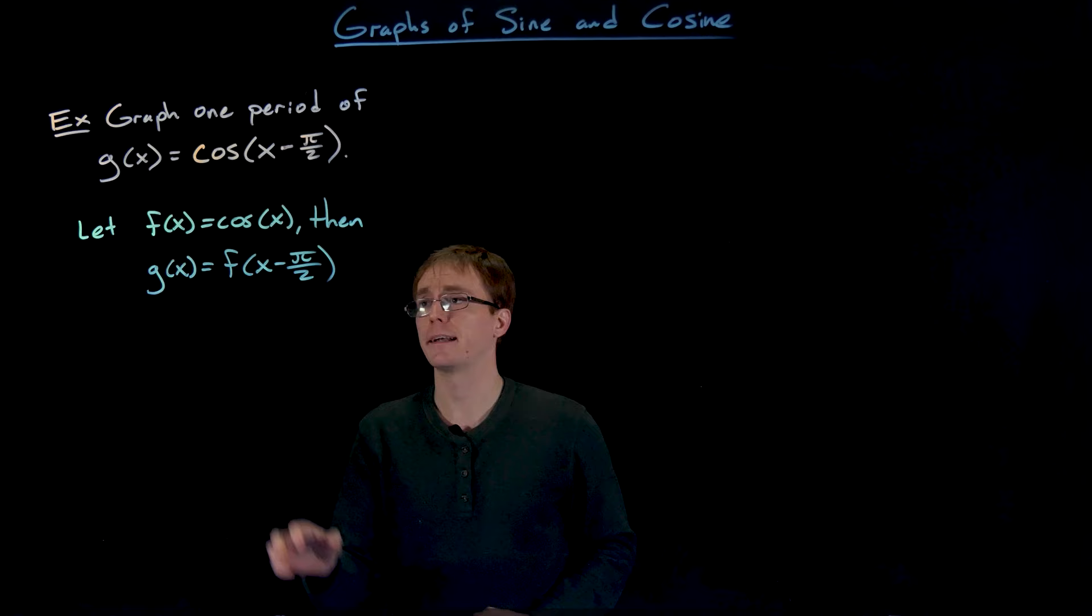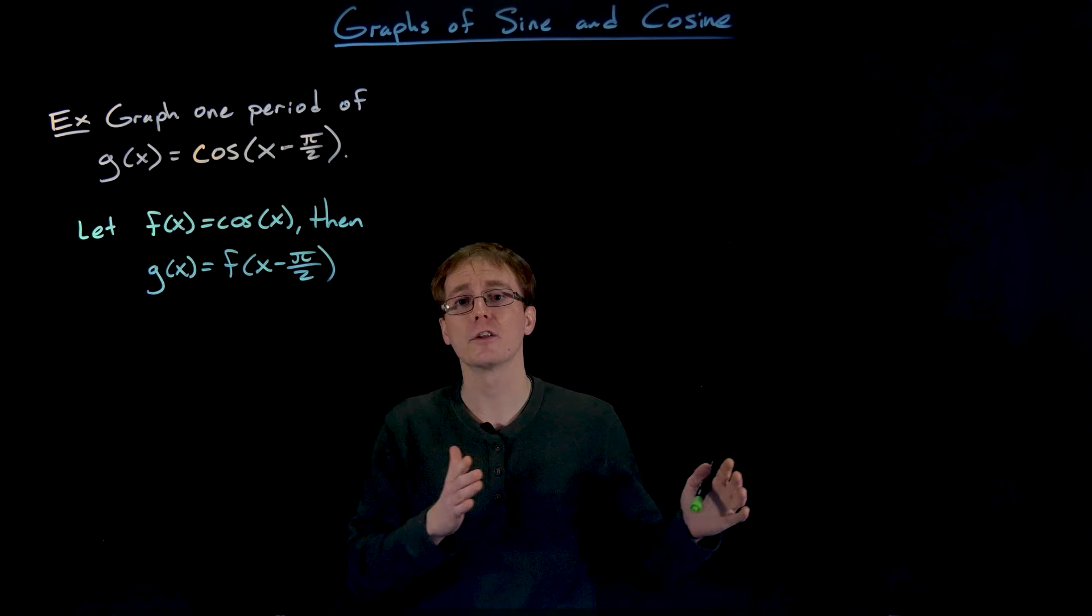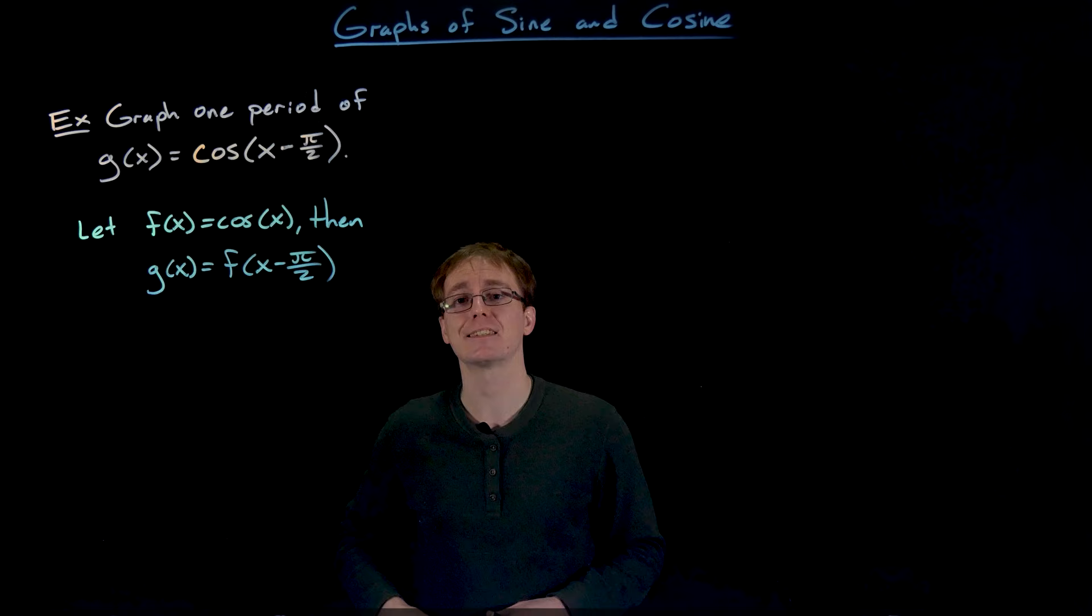We can recognize that the manipulation is happening inside of our function, which narrows it down to a horizontal type of transformation. We can also notice that it is addition or subtraction that is happening inside of our function, and so that's going to correspond to a horizontal shift.